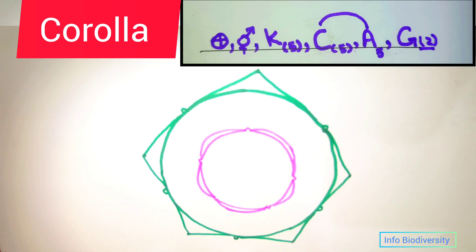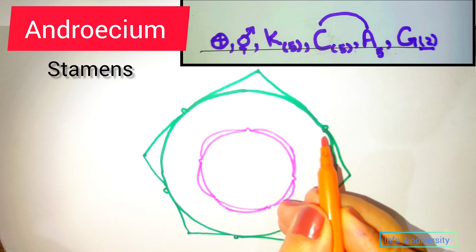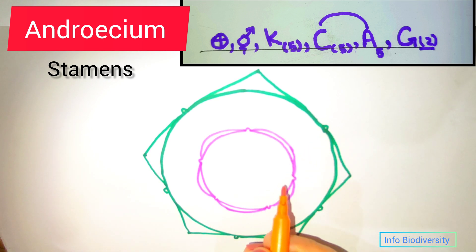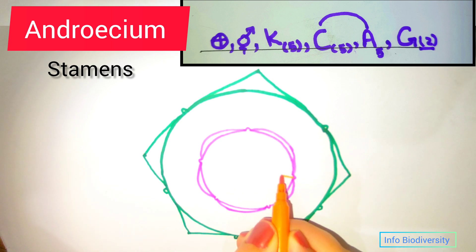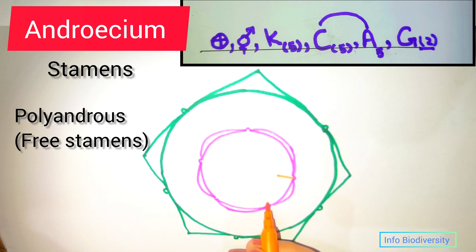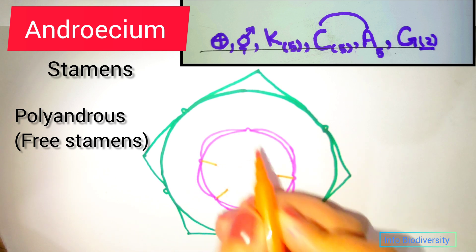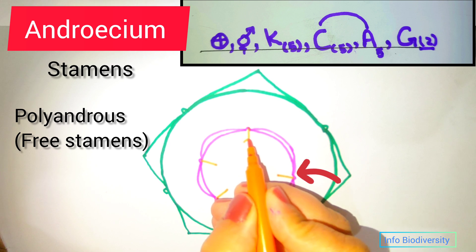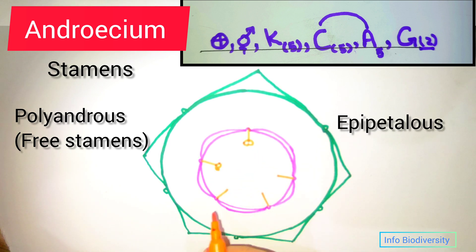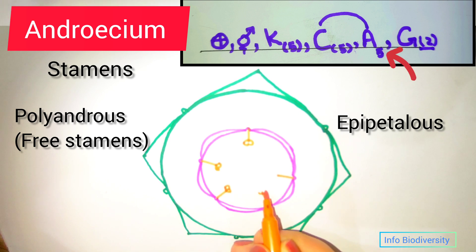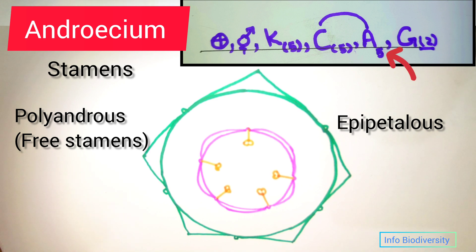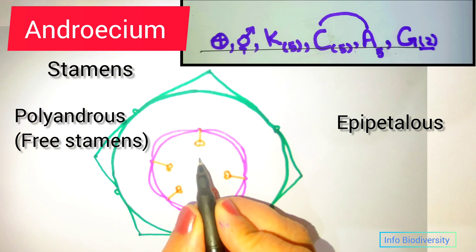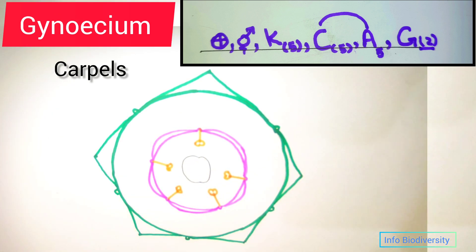The third whorl of the flower is the androecium. In family Solanaceae, the androecium is represented by five stamens that are free from each other — for free stamens we use the term polyandrous. The stamens are attached to the petals, located above the petals, so they are called epipetalous. In the floral formula, androecium is represented by five with no bracket, meaning the stamens are free, and an arrow shows their attachment to the petals — the term used is epipetalous.